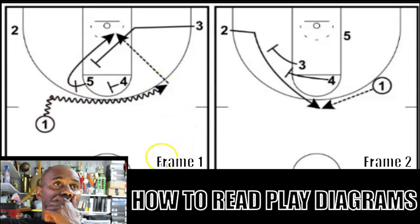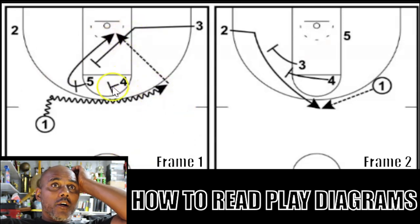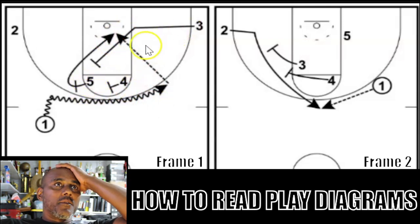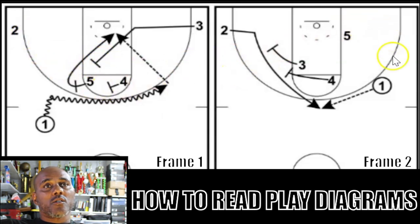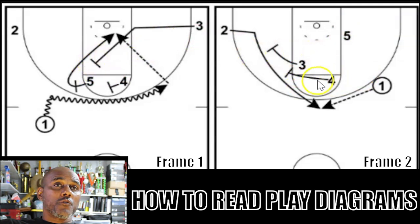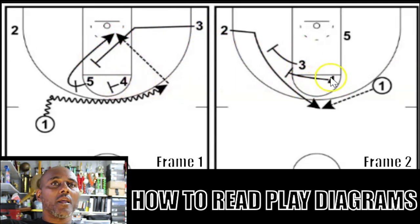Let's look at the second frame. In this play, the five ended up stopping at the block. The four, after he set his screen — actually the three, who was right here setting the screen — ended up going to set a second screen for the two. The four set a second screen as well. The one still has the ball; apparently the five was not open. So the three and the four are going to set what's called a stagger screen — two screens for the number two. The number two does player movement, running to set his guy up and then coming off the screen.